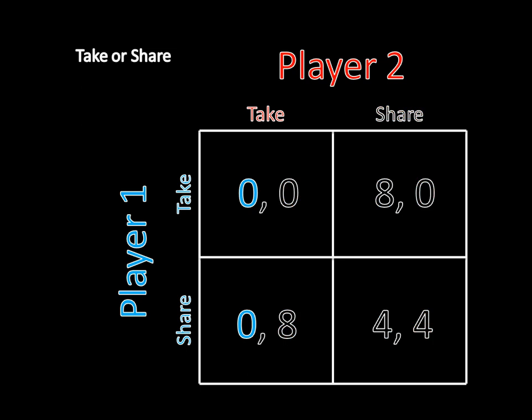Quickly note that take weakly dominates share. If player two takes, player one is indifferent between take or share — regardless of his choice he earns nothing. But if player two plays share, then take is strictly better than share for player one because eight is greater than four. So by definition, take weakly dominates share. We know take is weakly dominant and share is weakly dominated for player one.